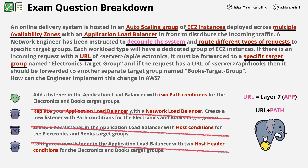If you look at how I've approached this question, even though the question and answers are relatively wordy, I've only focused on the really important keywords. In this case, all we had to do was focus on the fact that the question wanted us to direct specific URLs to specific target groups. Because of that, we could eliminate network load balancers and all condition types apart from path conditions, leaving us with one possible answer — answer A. This question was taken from TutorialsDojo.com, and I highly recommend checking out that site if you need extra exam practice beyond the practice exam included with this course. I've included a link attached to this lesson. With that being said, go ahead and complete this video, and I'll look forward to you joining me in the next.